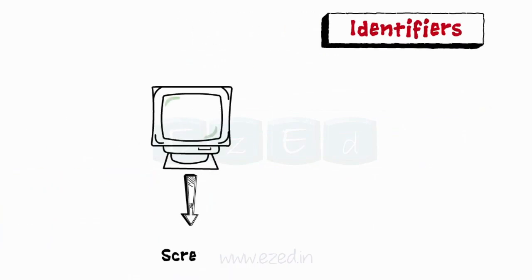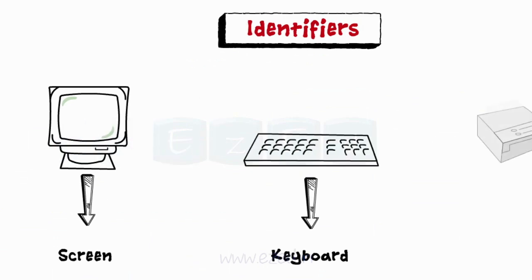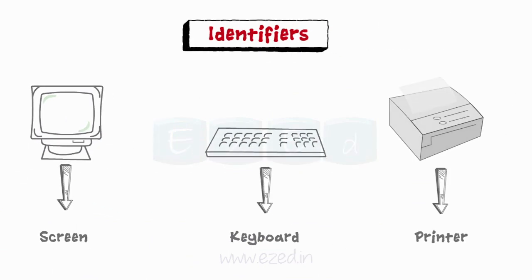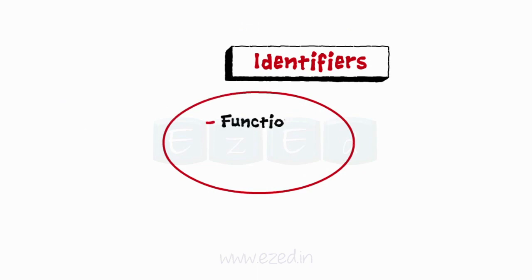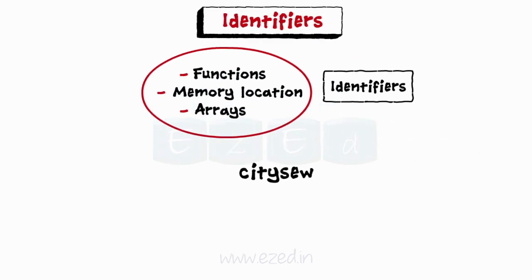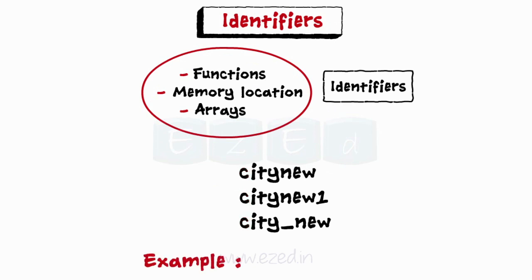Moving on to identifiers now. Identifiers are names given to anything for the purpose of identification. They are user defined names given to function, memory location, arrays, etc. Identifiers basically consist of sequence of letters, digits or underscore with the letter as the first character. For example, here, principal and interest are identifiers.